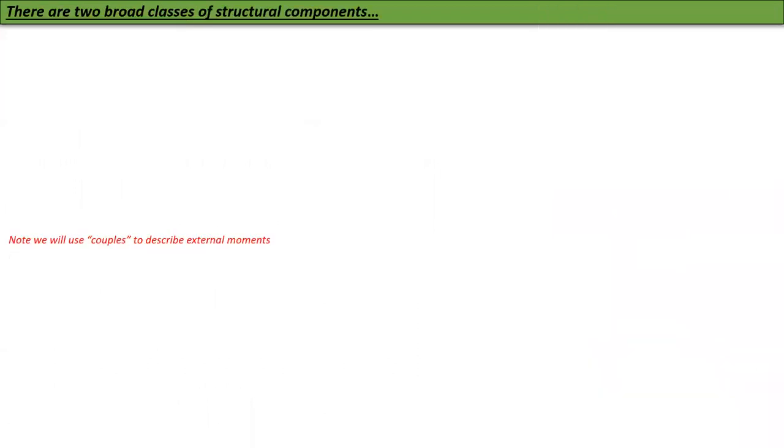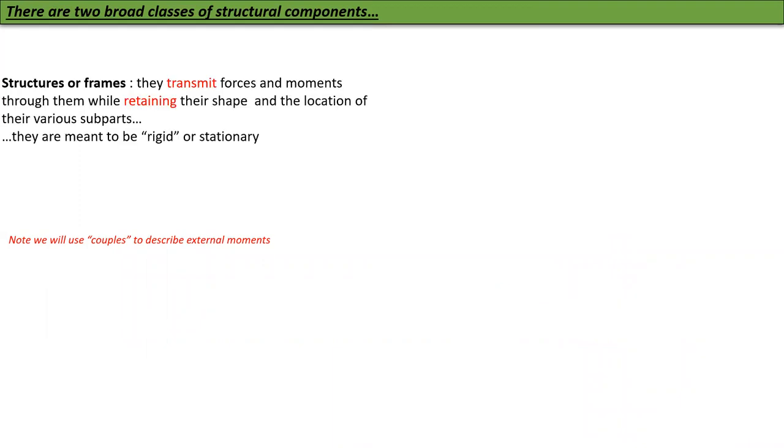There are two broad classes of structural components. Structures are frames. They transmit forces and movements through them while retaining their shape and location of their various subparts. They are meant to be rigid or stationary.